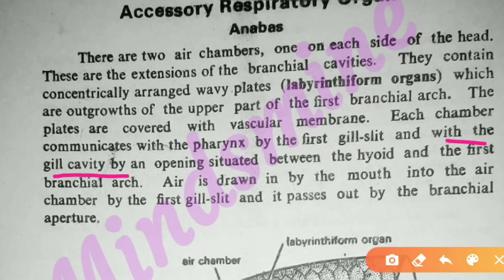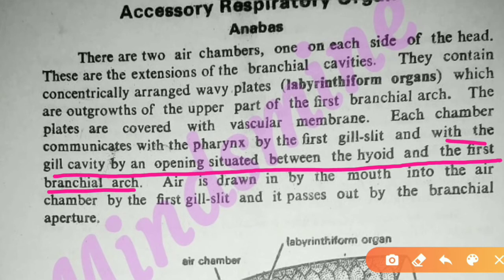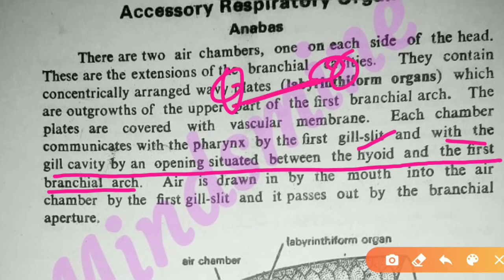The chamber also communicates with the gill cavity through an opening situated between the hyoid bone and the first branchial arch. The hyoid is the tongue bone. So both the pharynx via the first gill slit and the gill cavity via the hyoid-branchial arch opening are connected to the air chamber.